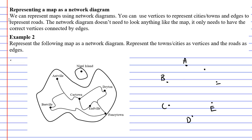So we have A, B, C, D, E, F, and then Nigel Island is the letter N. All right, now that we've put our vertices down and we've labeled them, we're going to start joining them with edges.